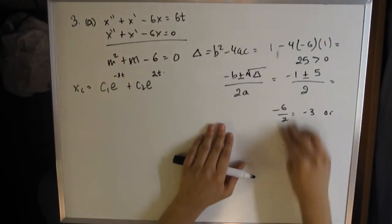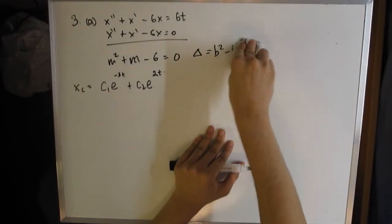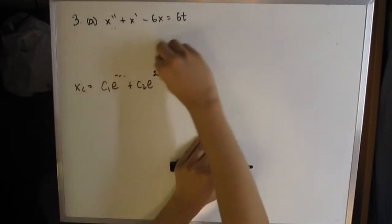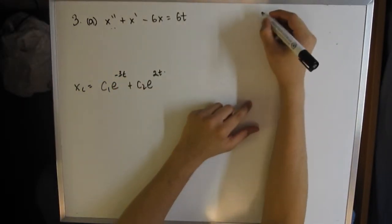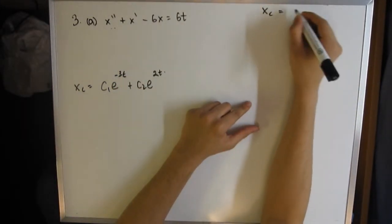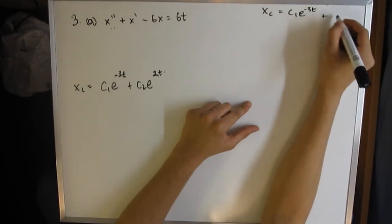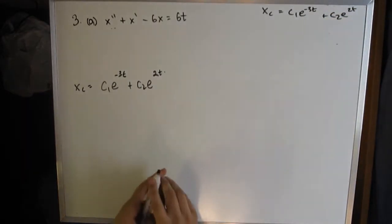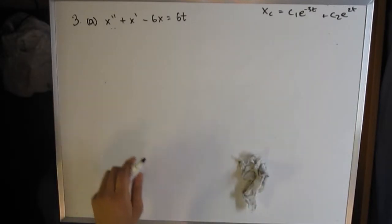I'm going to erase all this because we need a decent amount of space for the next part. I'm going to rewrite this equation up here, xc = c₁e^(-3t) + c₂e^(2t), so we can remember it for our final answer.